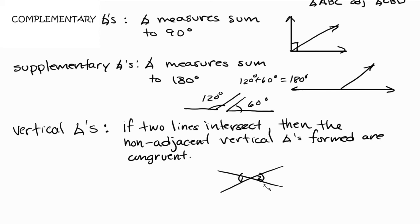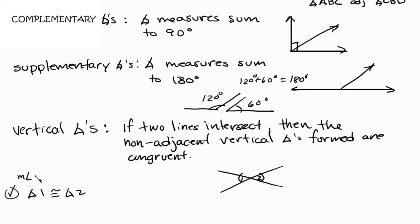Since we've mentioned congruency, let me point out something very important for geometry proofs. When you want to say that angle one is congruent to angle two, the line right before it in your proof needs to say: the measure of angle one is equal to the measure of angle two. Anytime you're proving congruency, always make sure the prior line talks about measure.